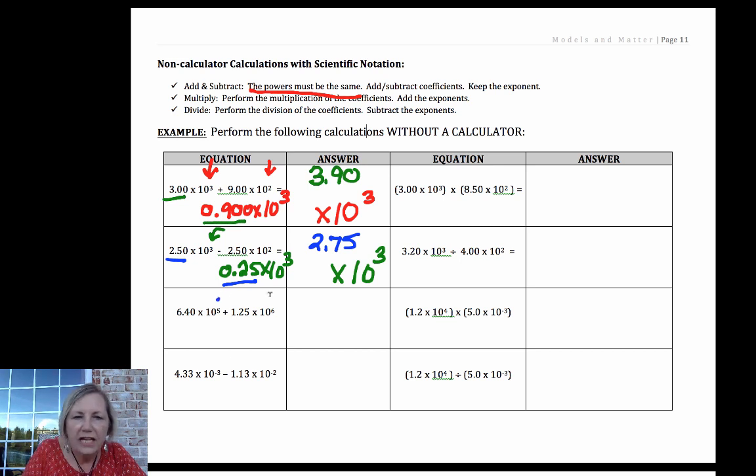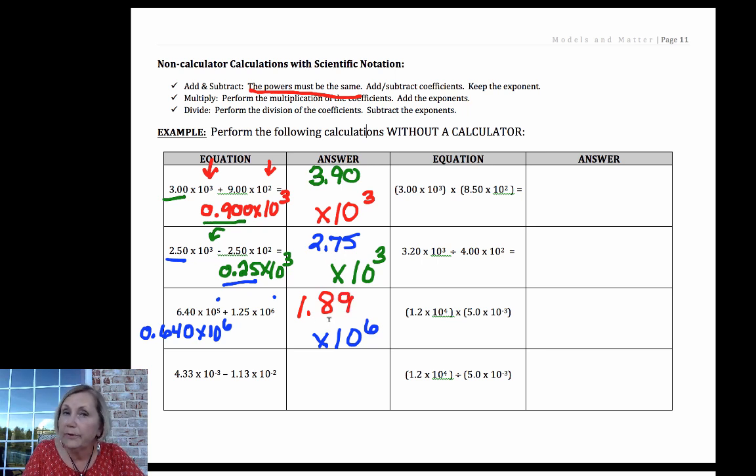Okay, this time I have a 5 and a 6. I'm going to go with the larger, so I'm going to change this one to 0.640 times 10 to the sixth. So I know my power is going to be times 10 to the sixth, my exponent. My number in front, now I'm going to add 0.64 and 1.25 and double check my math. You can always double check these using your calculator. I just want you to know the skills for doing them by hand would be 1.89 times 10 to the sixth.